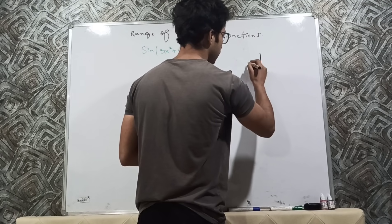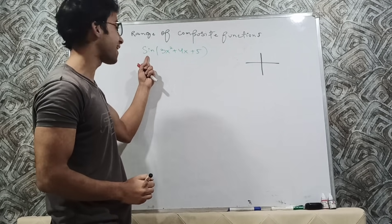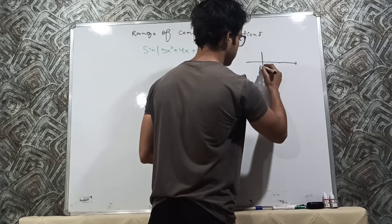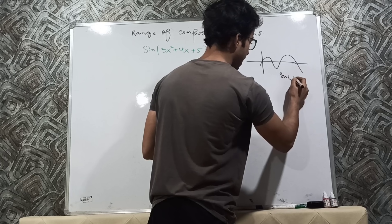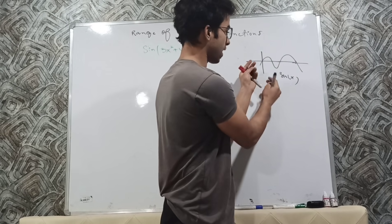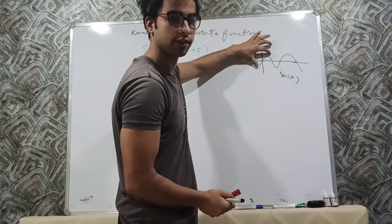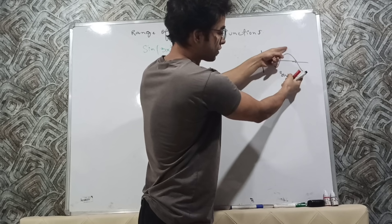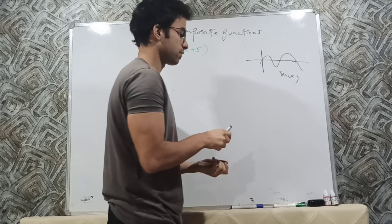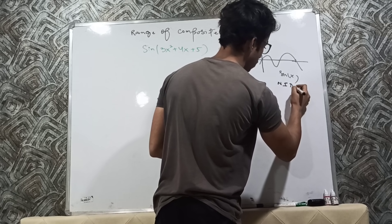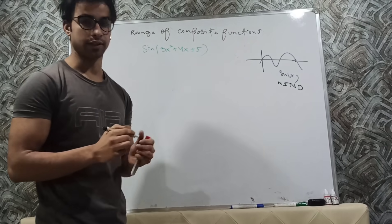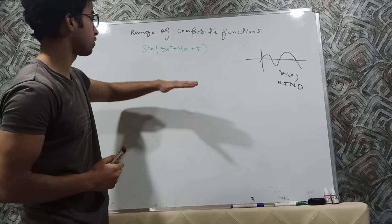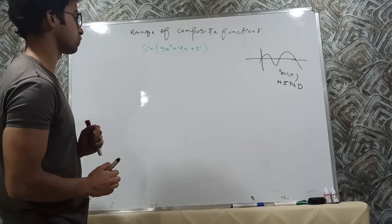We have to consider whether sine is an increasing function, a decreasing function, or neither increasing nor decreasing. If I draw the graph of sine, it looks like a wave. I can see that from here to here it is increasing, from here to here it is decreasing, and so on. So sine x is neither increasing nor decreasing — NIND. This concept is crucial in order to find the range of the entire function: sine of 3x² + 4x + 5.